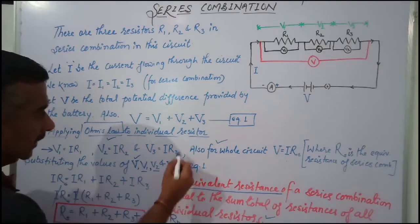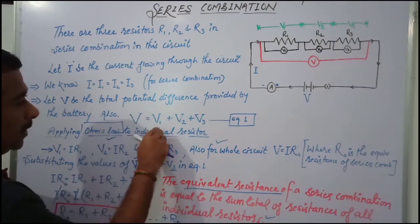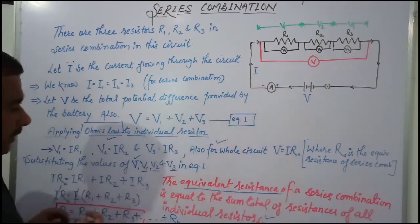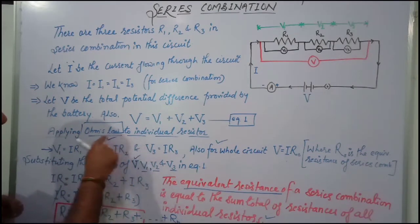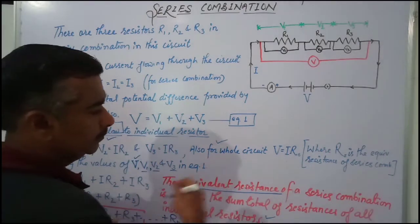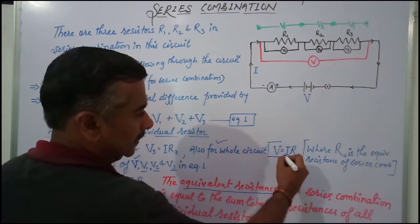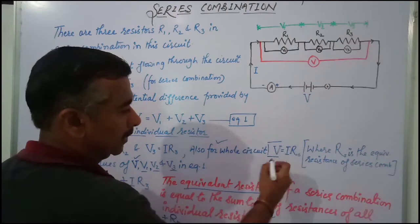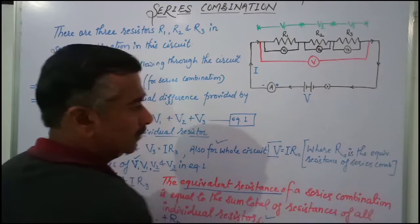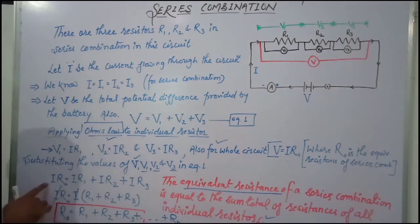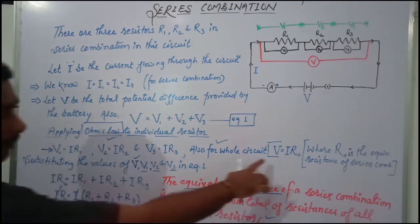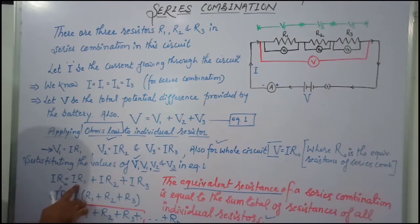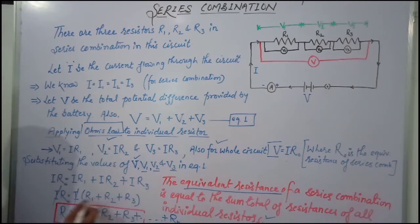Substituting the values of V, V1, V2, and V3 into Equation 1: the total potential drop is the sum of the potential drops across each resistor. So I·Rs equals I·R1 plus I·R2 plus I·R3. Taking I as common and cancelling it from both sides, we get Rs equals R1 plus R2 plus R3.